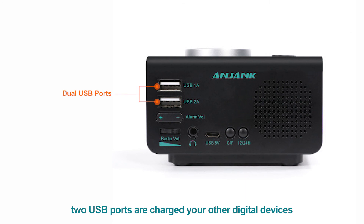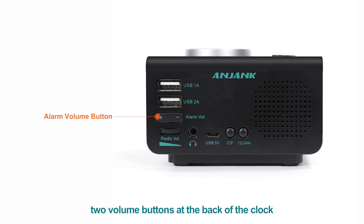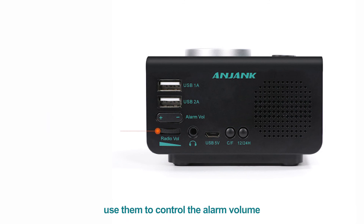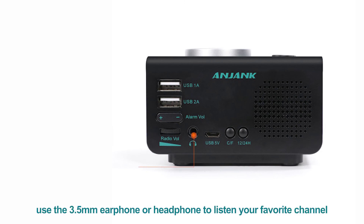Two USB ports are available to charge your other digital devices. Two volume buttons at the back of the clock allow you to control alarm volume and radio volume independently. Use the 3.5mm earphone jack to listen to your favorite channel.